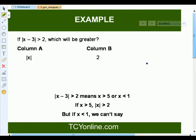Now, let's look at one more example. It says absolute value of x minus 3 is greater than 2. Which will be greater? Column A says absolute of x, column B says 2. Now, absolute of x minus 3 is greater than 2. That means x is greater than 5 or x is less than 1. So, if x is greater than 5, that means absolute of x is basically greater than 2. But if x is less than 1, we cannot say this.